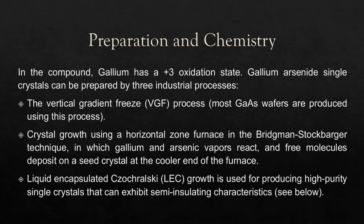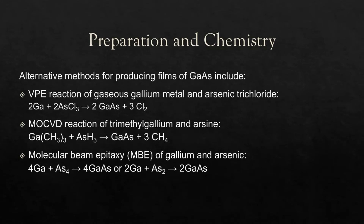For preparation and chemistry, gallium arsenide single crystals can be prepared by three industrial processes: the vertical gradient freeze or VGF process, which produces most GaAs wafers; crystal growth using the horizontal Bridgman technique where gallium and arsenic vapors react and deposit on a seed crystal; and liquid-encapsulated or LEC growth, used for producing high-purity single crystals with semi-insulating characteristics. Alternative methods include VPA, MOCVD, and molecular beam epitaxy.